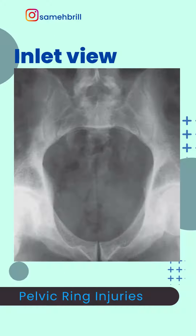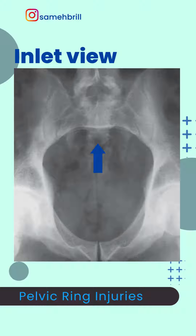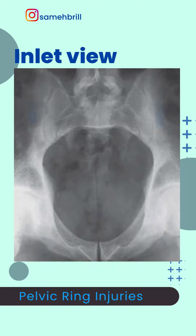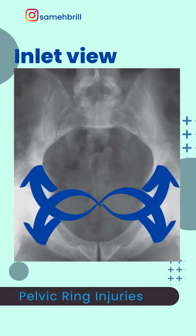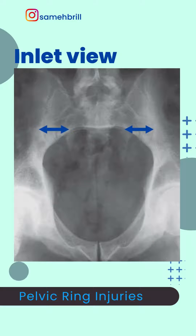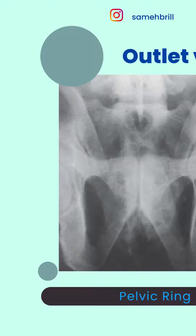The inlet view is ideal for visualizing anterior and posterior displacement of the sacroiliac joint, the sacrum, or the ilium, external or internal rotation of the hemipelvis, widening of the sacroiliac joint, and sacrum impaction injuries.